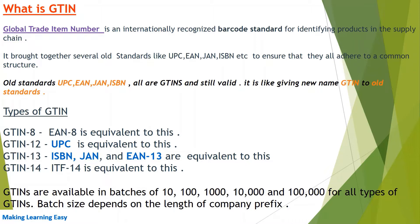There are four types of GTIN. GTIN-8, which is equivalent to the old standard EAN-8. GTIN-12, which is equivalent to the old standard UPC (Universal Product Code). GTIN-13, which is equivalent to old standards like ISBN, GEN, and EAN-13. And GTIN-14, which is equivalent to ITF, the old standard for cases and cartons.